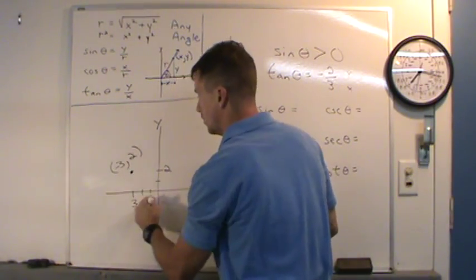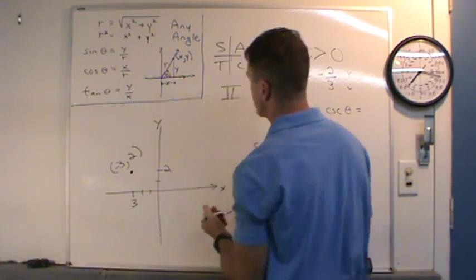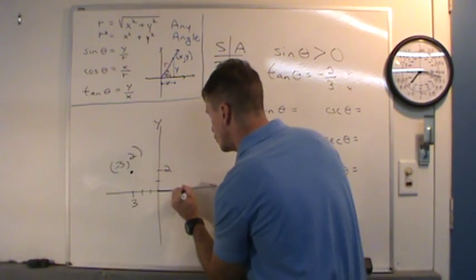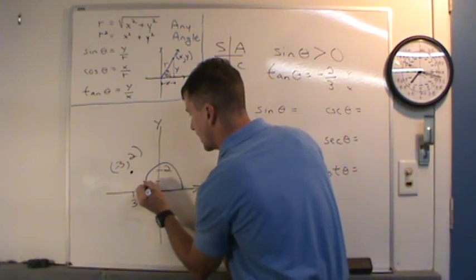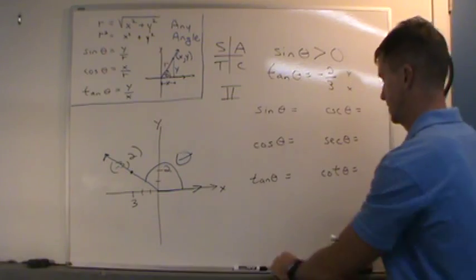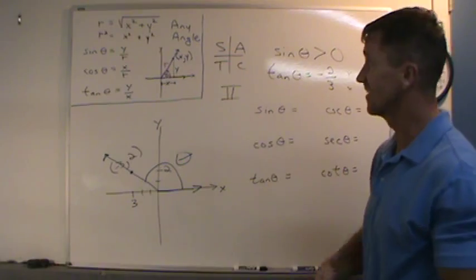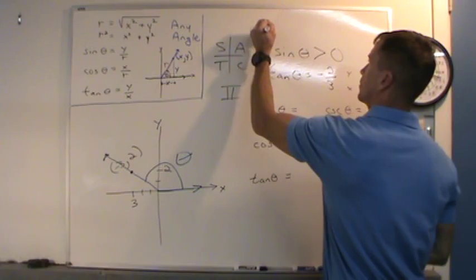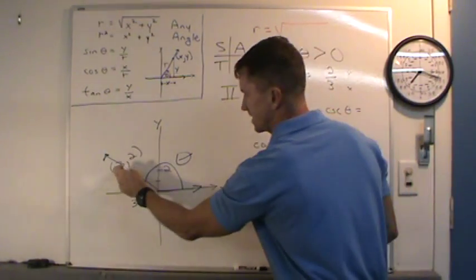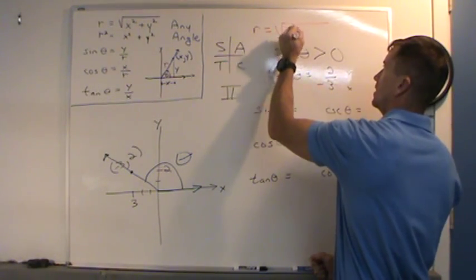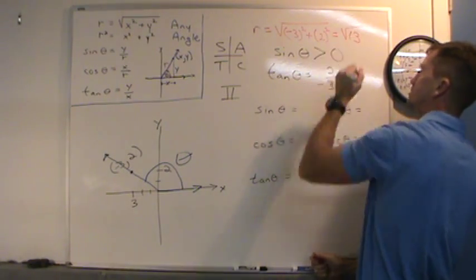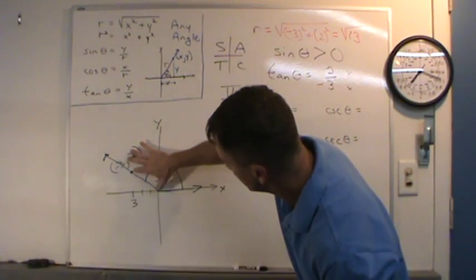In quadrant 2, the x-coordinate is negative and y is positive — that's why tangent comes out negative. Here's the angle in standard position; it rotates and the terminal side lies in quadrant 2. Now I need R. R equals the square root of x squared plus y squared: negative 3 squared plus 2 squared equals the square root of 9 plus 4, which is the square root of 13. So x is negative 3, y is 2, and R is square root of 13.